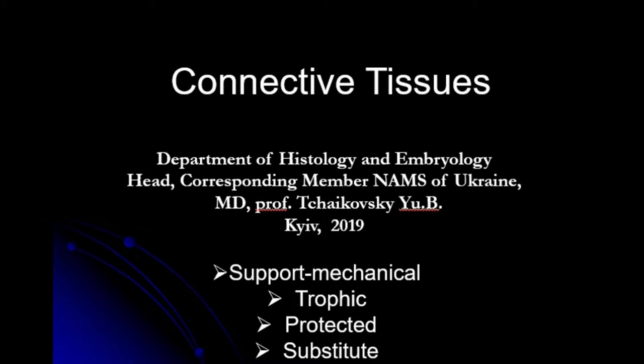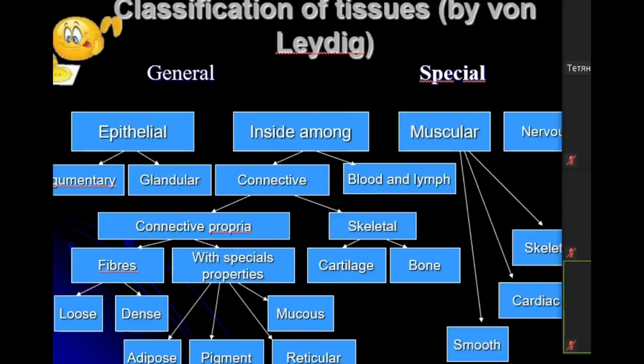Depending on the concentration and amount of each component of the extracellular matrix, we can classify different types of connective tissue, which have different properties and can be classified depending on the direction and relation between different components of the extracellular matrix.